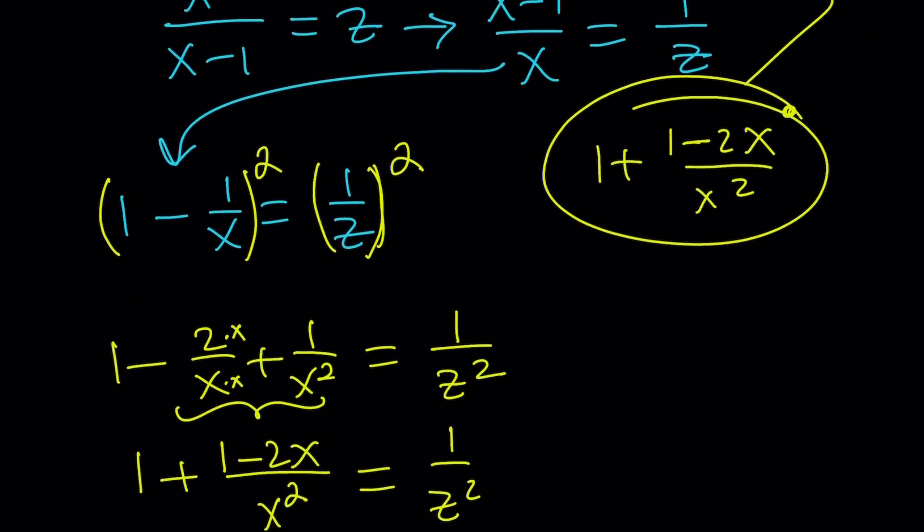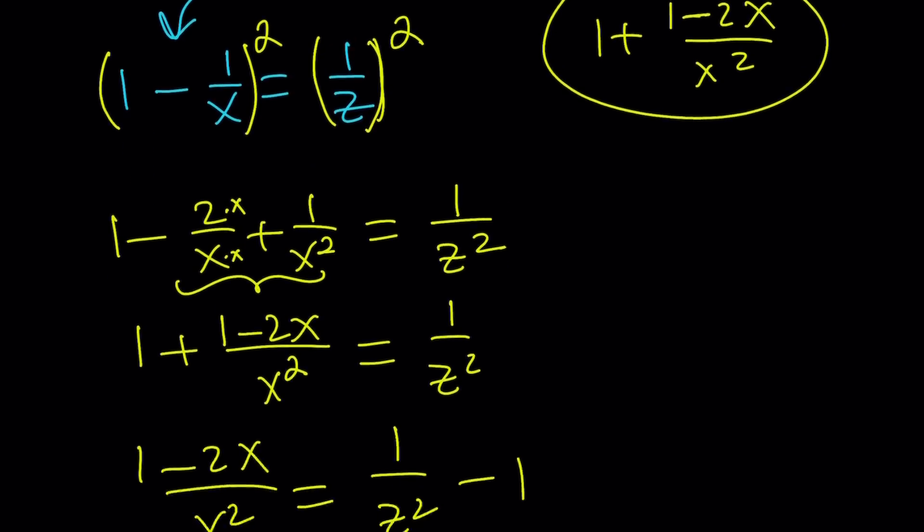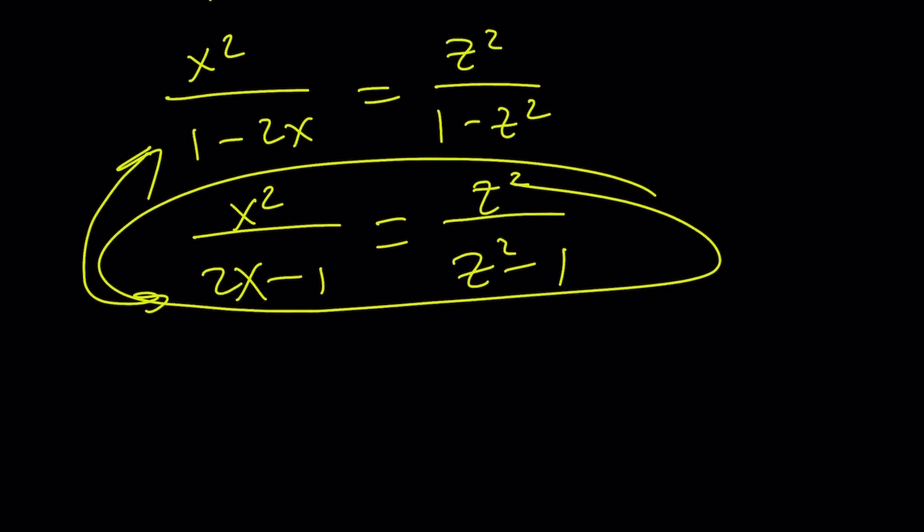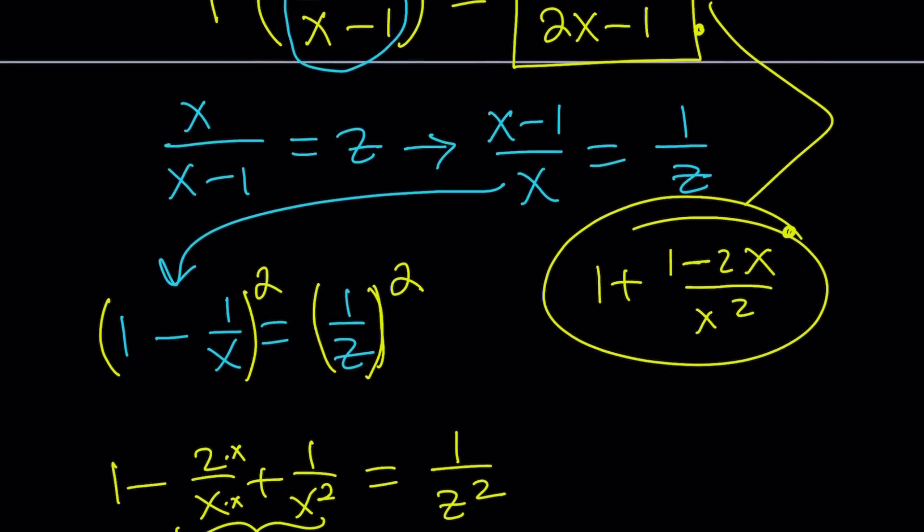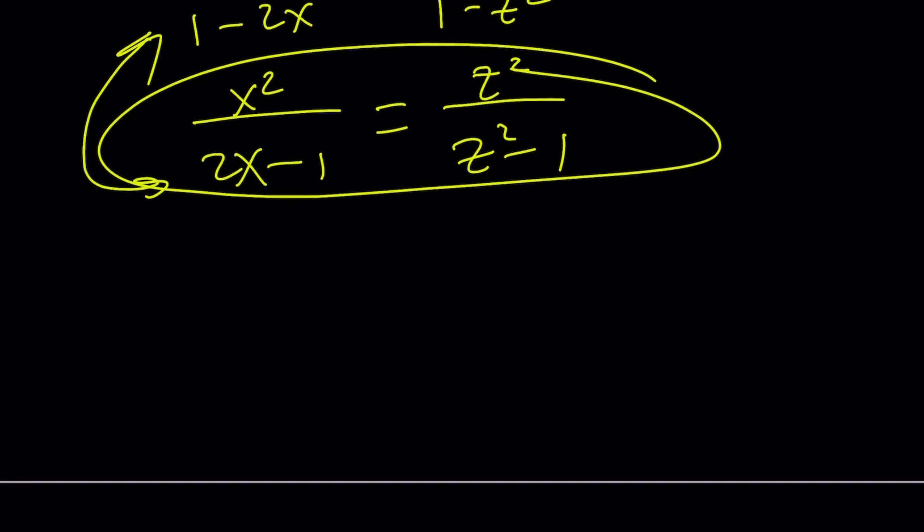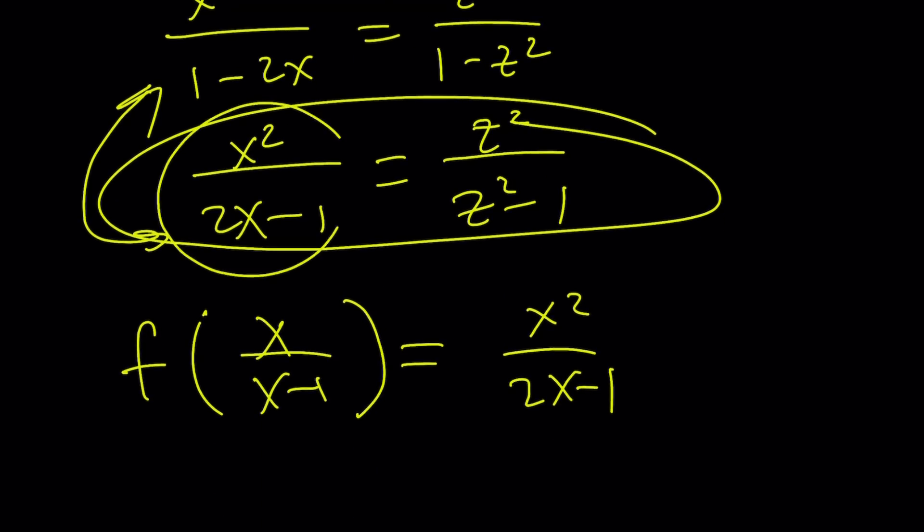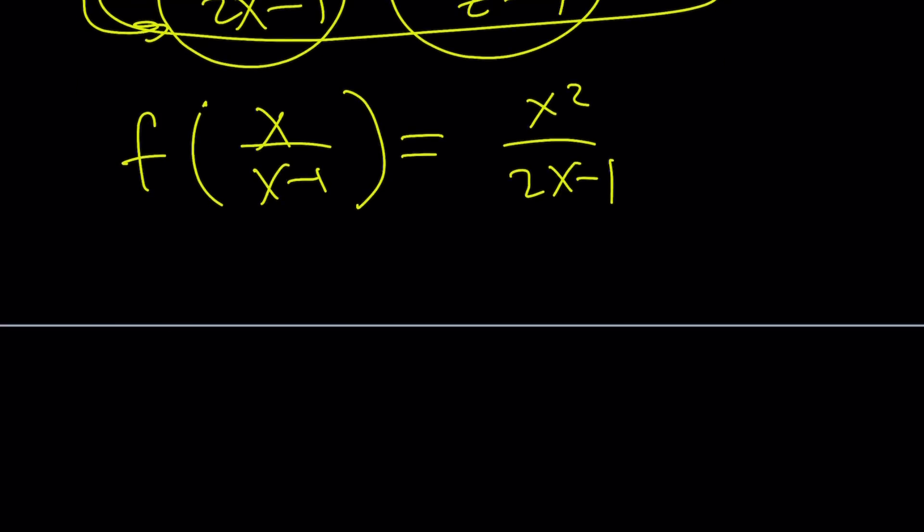So, where did this come from? It came from this. x squared over 2x minus 1 equals this now. Right? Okay. Where does that show up though? It shows up on the right-hand side. So, here's what we have. Let's summarize. F of x over x minus 1 equals x squared over 2x minus 1. And now, this one is equal to this. So, it's going to be z squared over z squared minus 1.